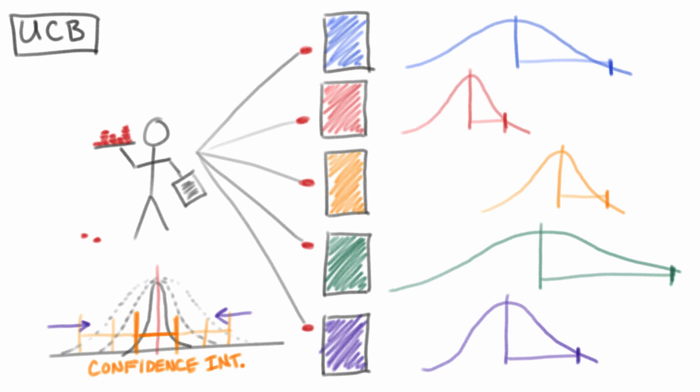As the UCB strategy takes samples of each option's rewards, it considers the variance among the observed samples to also calculate an upper confidence bound. This upper confidence bound, when added to the average, represents the statistical potential for reward. Each round, the slot machine with the highest potential reward is chosen, which provides a dual benefit.